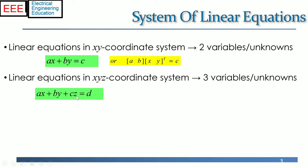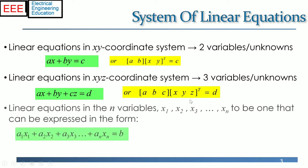For a three variables case, the linear equations in x-y-z coordinate system can be written as ax + by + cz = d, or in dot product notation as the multiplication of the row vector a, b, c and the column vector x, y, z, which equals d.